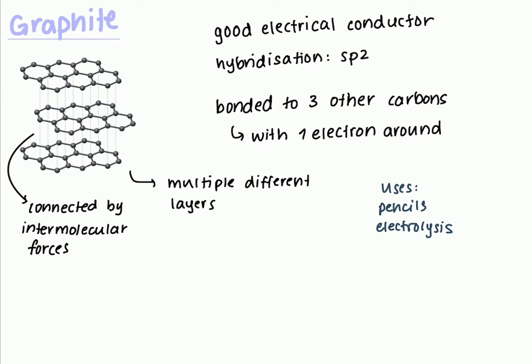The next one we have is graphene. Graphene and graphite are very similar. Graphene is basically a singular layer of graphite. It is nearly transparent because it's not multiple layers, and therefore it's used in touchscreens.